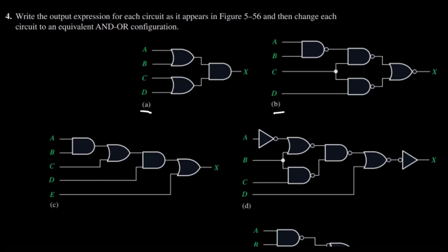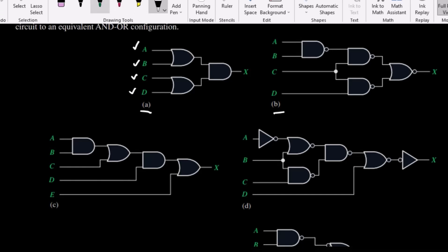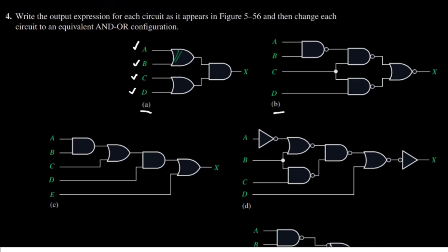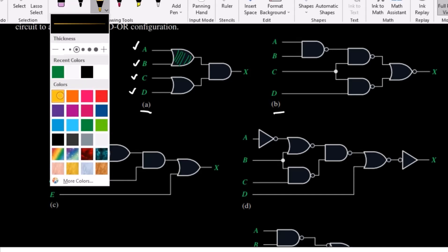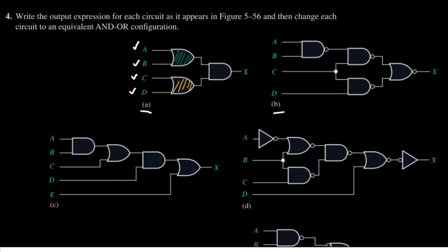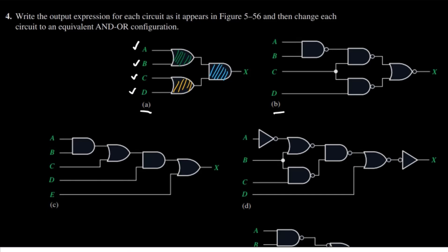Let us look at part A. In part A we have four inputs which are A, B, C and D. Here the inputs which are given to each gate — let me give them certain colors. To the first gate I'm giving this green color, to the second one this yellow color, and to the third one this light blue. The output here we will have in the form of this light blue.